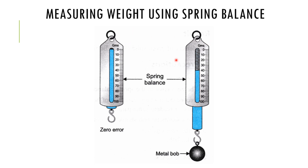Spring balance is a device which is used for measuring the force acting on an object. It contains a coil spring. When no metal bob is loaded, the reading is zero. When a metal bob is loaded, we can see the force measured in Newtons.